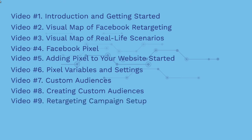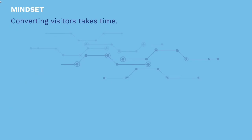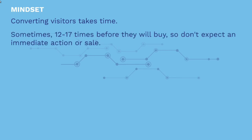Last but not least, video number nine covers retargeting campaign setup. Now let's talk about mindset, because I'm a big believer in having the right mindset before you get started. You're not going to make a sale or get leads right away just by setting up a Facebook retargeting campaign. Converting visitors really does take time — sometimes 12 to 17 touch points, meaning you have to get in front of them 12 to 17 times before they will buy.